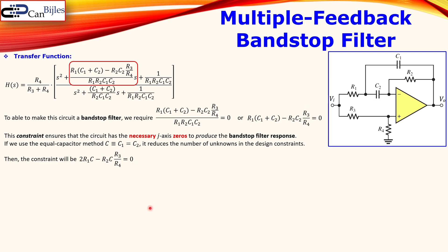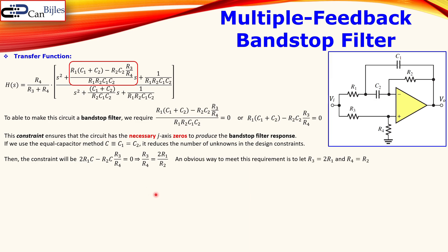Dividing out C from both sides, we get the ratio of two resistors equal to another ratio with a multiplication factor of two. The obvious choice is to set R3 = 2·R1. To make the denominators match as well, we set R4 = R2 — a very simple condition.